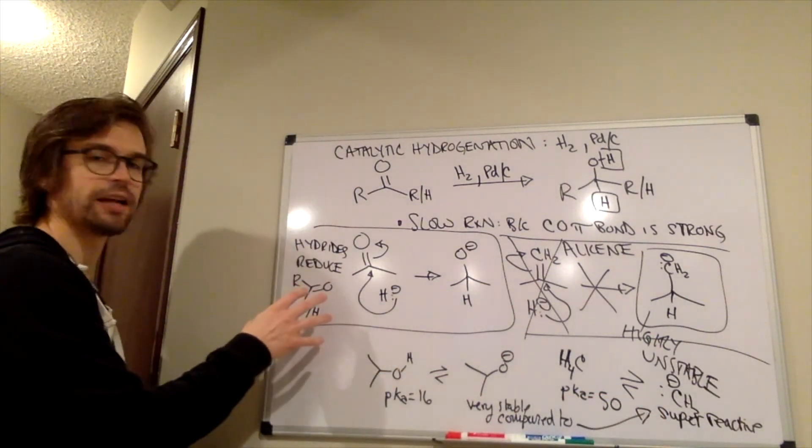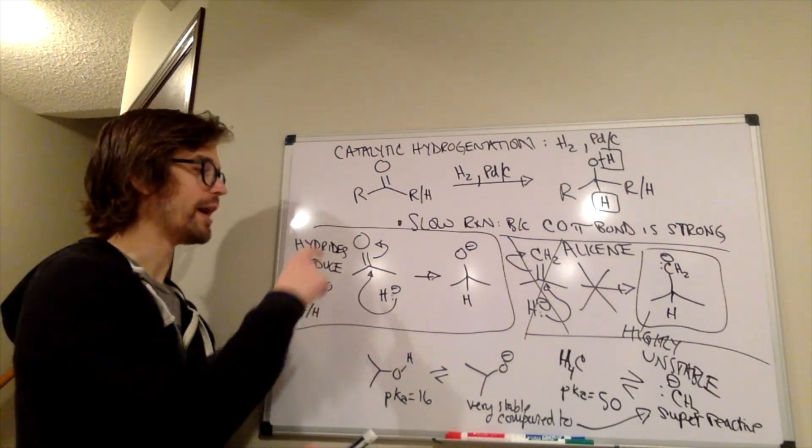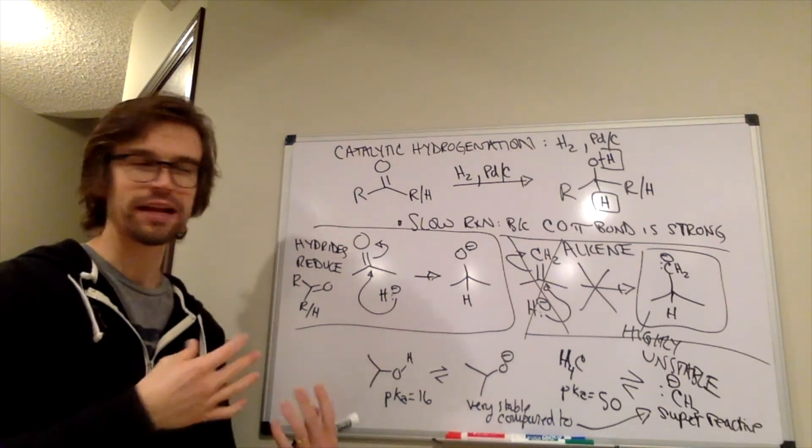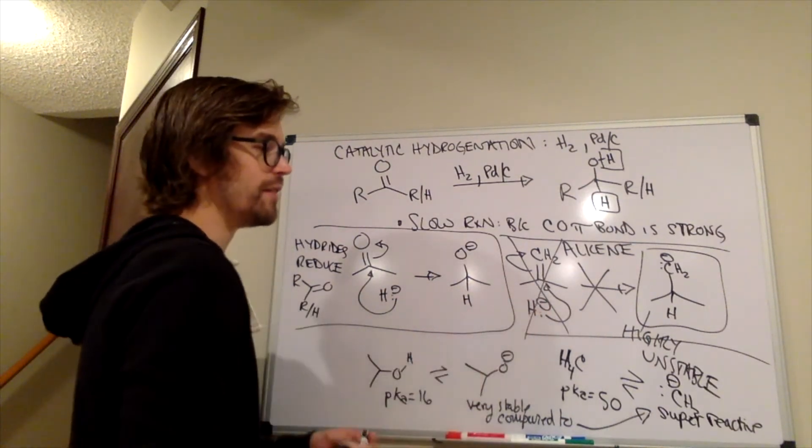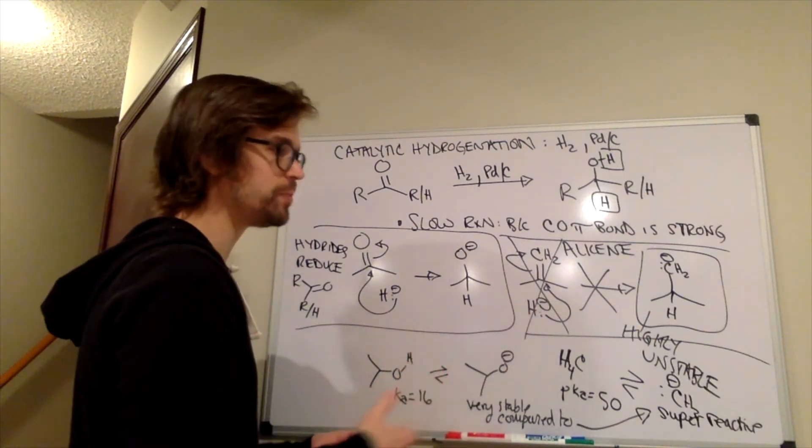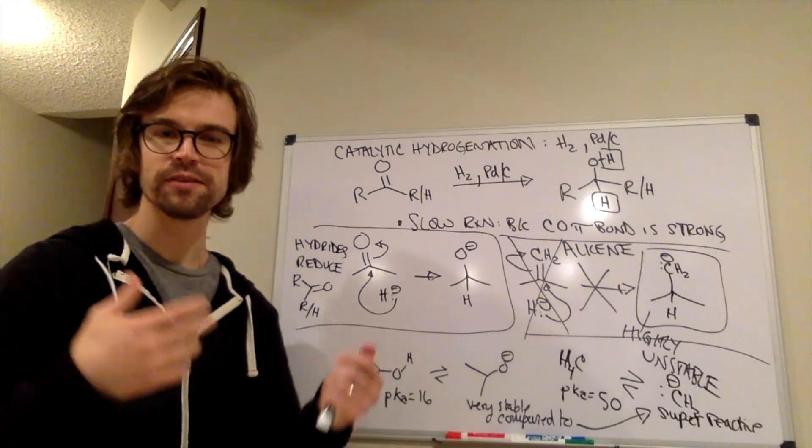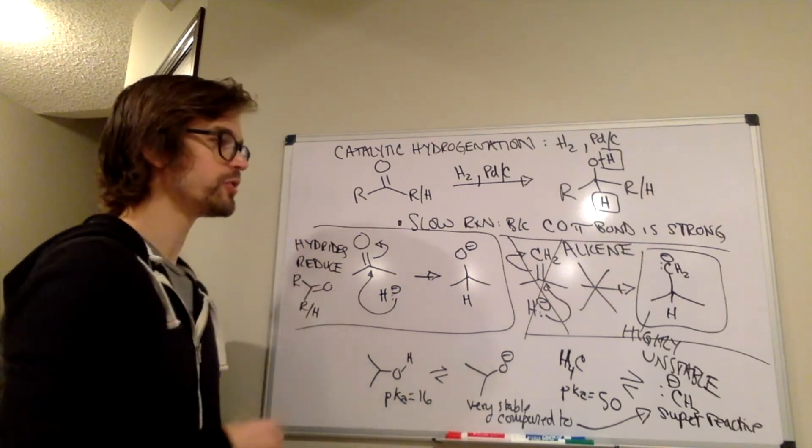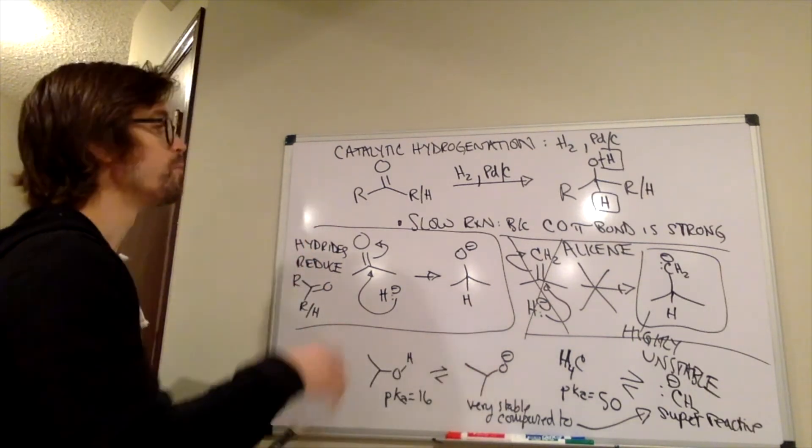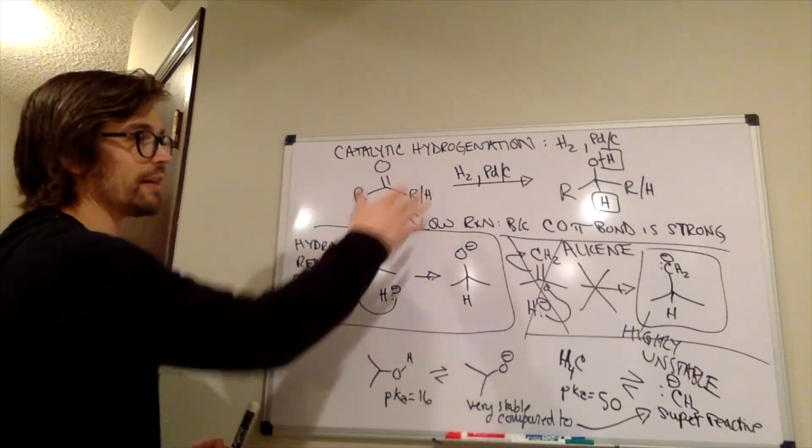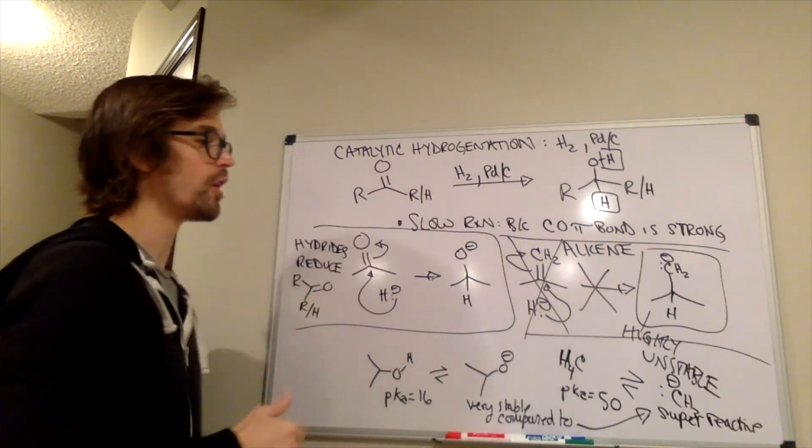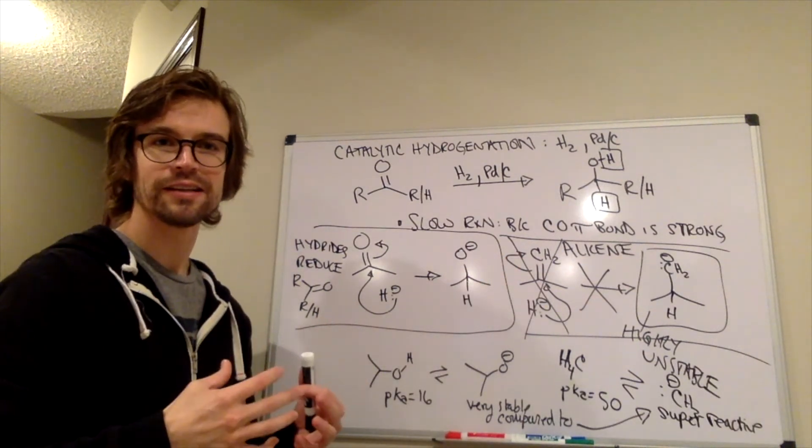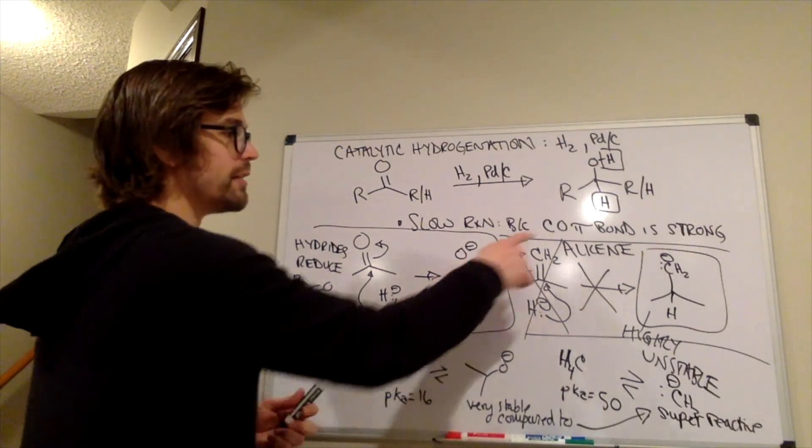So these hydride reagents are able to reduce these polarized functional groups, because when they add to the partial positive side, the oxygen is pretty stable with a negative charge, versus the H minus, if it's being added to one side of an alkene, it's going to form this super reactive carbanion. So that's why these hydride reagents reduce the carbonyls really well, but fail with these alkenes. What we saw previously is that with the catalytic hydrogenation, H2 platinum carbon works really well at reducing alkenes, because the C-C pi bond is less stable. It's more reactive than the C-O pi bond.